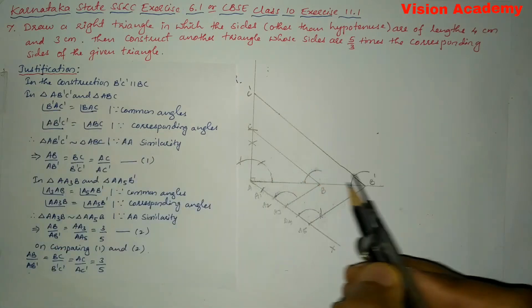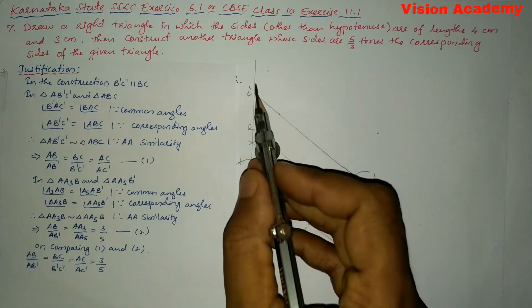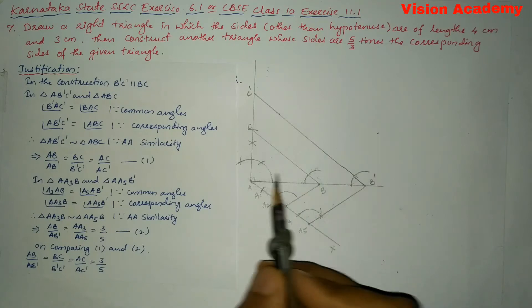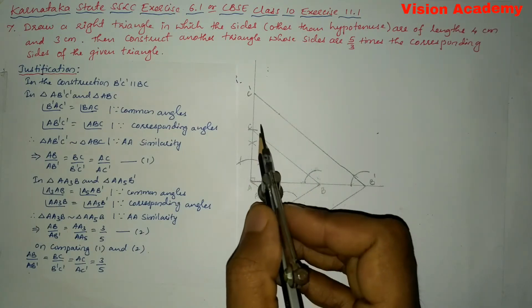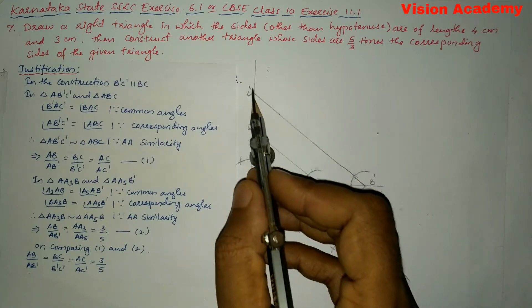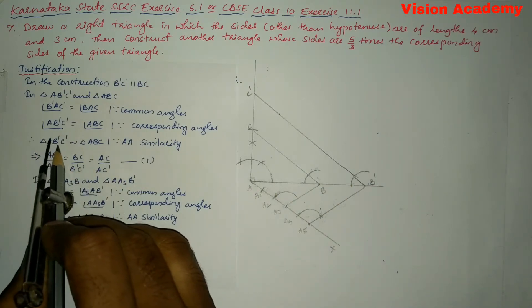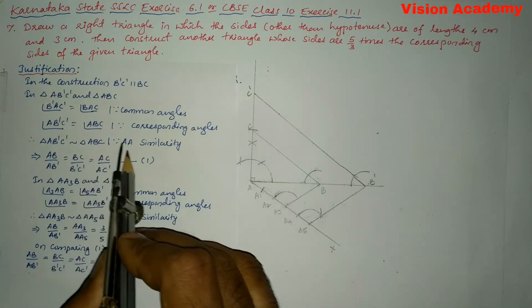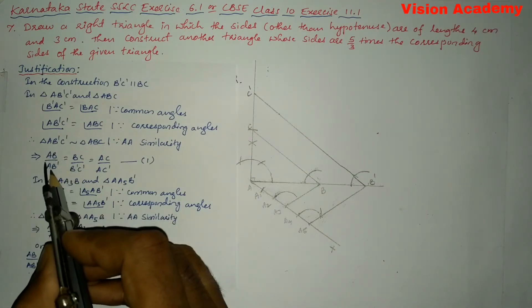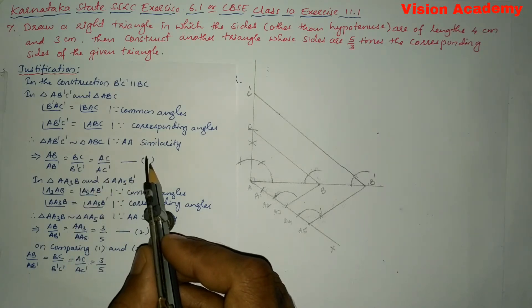Now let us go for justification. In the construction, B'C' is parallel to BC. In triangle AB'C' and triangle ABC, angle B'AC' and angle BAC are both common angles. Therefore triangle AB'C' is similar to triangle ABC by the AA similarity criterion. This implies, as per the basic proportionality theorem, we can write: AB/AB' = BC/B'C' = AC/AC'. Let us consider this as equation number 1.